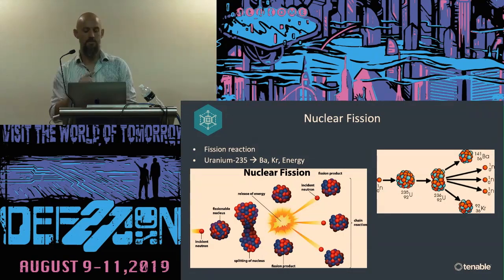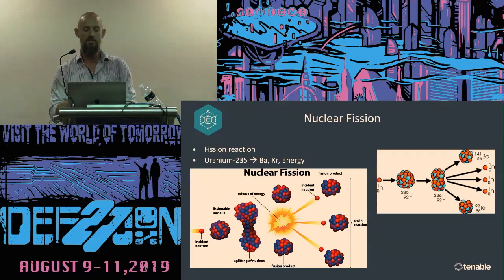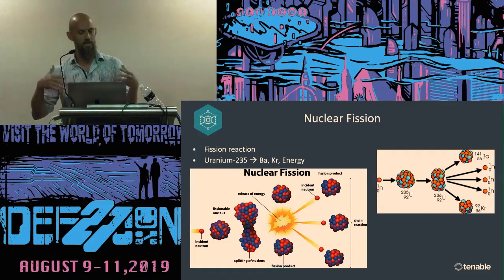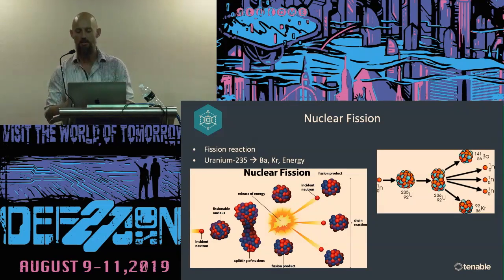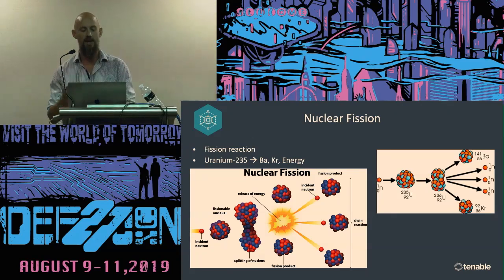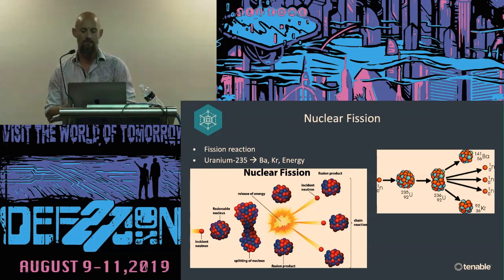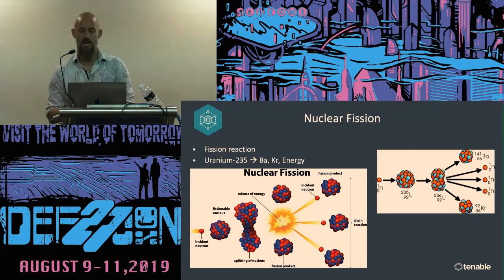Uranium-235 is a really nice isotope of uranium — U-238 is the naturally occurring one. When you hear about people enriching uranium, they're adding more U-235 to the U-238 natural fuel, making it more chain-reactive. The neutrons produced — those three neutrons in the reaction — are exactly how the fission reaction is controlled, and they're the most important part of the chain reaction.